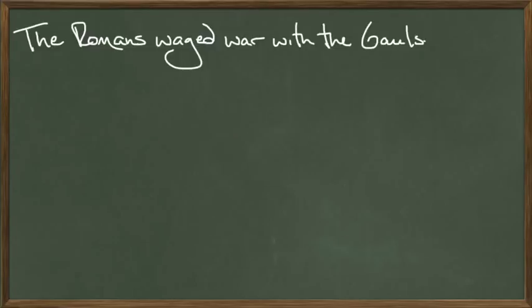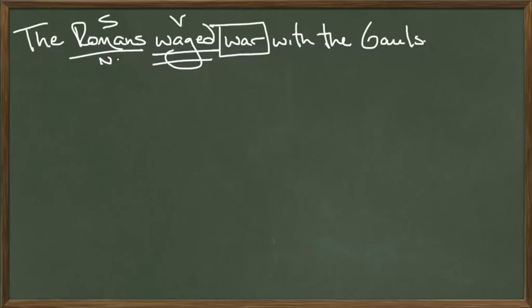In our sentence we have: 'The Romans waged war with the Gaul.' The subject of the sentence is 'the Romans,' nominative case. What are they doing? They're waging — or they did wage — verb. What did they wage? They waged war, direct object, accusative case. They waged war with — preposition — with whom? The Gauls, object of the preposition. 'With the Gauls' is a prepositional phrase, ablative case.